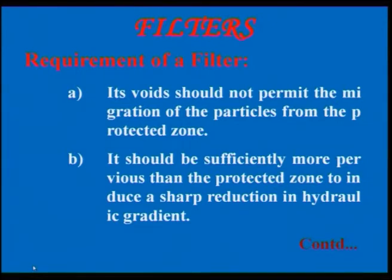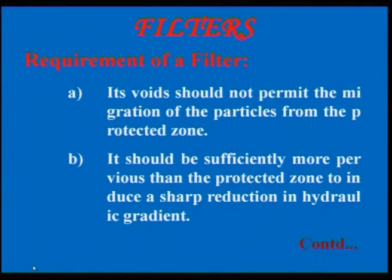The second criteria is that the filter should be sufficiently more pervious than the protected zone to cause a sharp reduction in hydraulic gradient. When hydraulic gradient builds up, pore water pressure increases, so the soil loses its strength and effective stress decreases. Therefore the filter must be sufficiently pervious to allow water to pass immediately, causing a reduction in the hydraulic gradient.